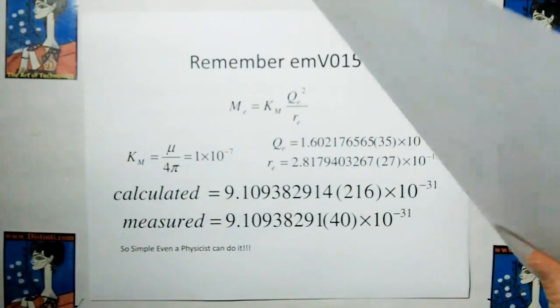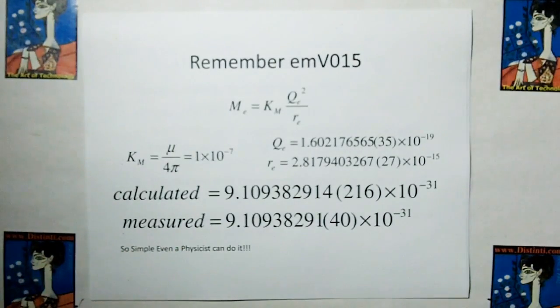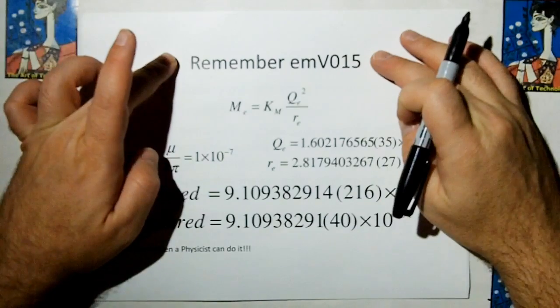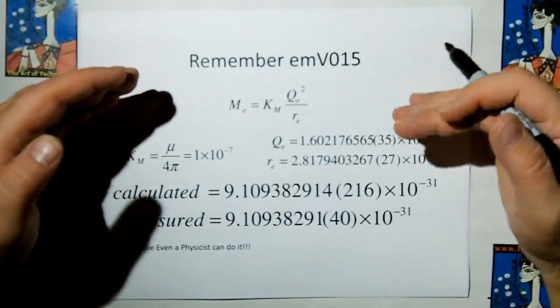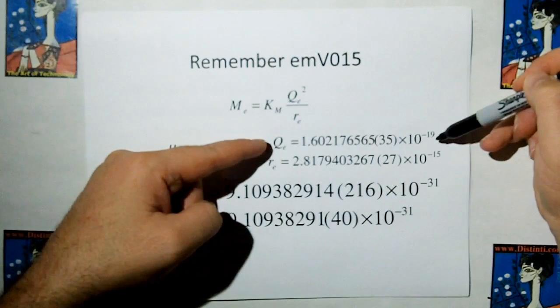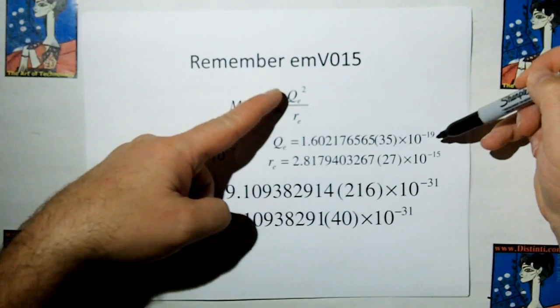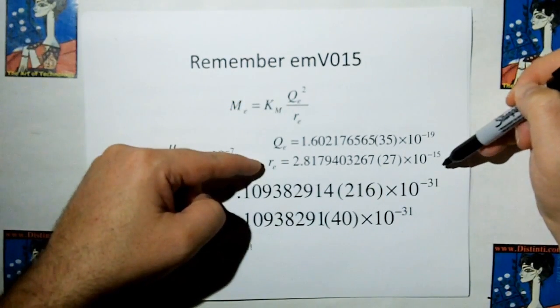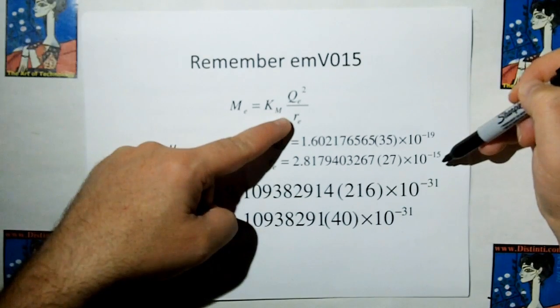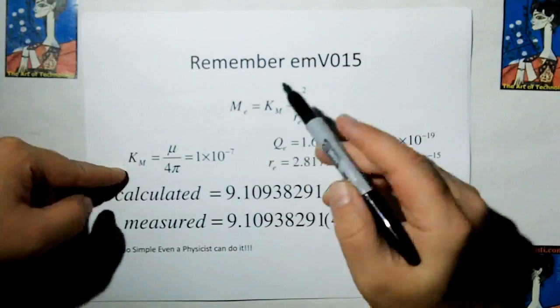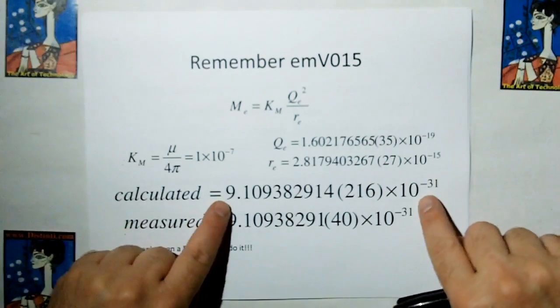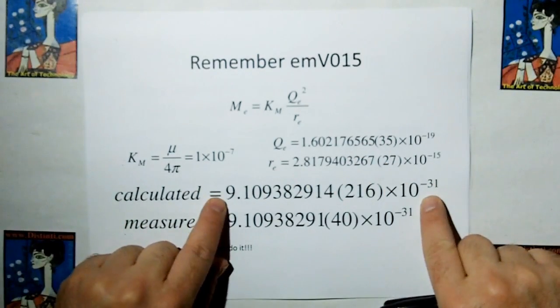And if we go in and plug in real values, remember we did this in EMV video 15, and we plug QE, the standard charge for an electron in, the classical electron radius for the distance, and KM, which is mu over four pi, which is two times the minus. We end up with a calculated value for the quote-unquote mass of an electron to be this.